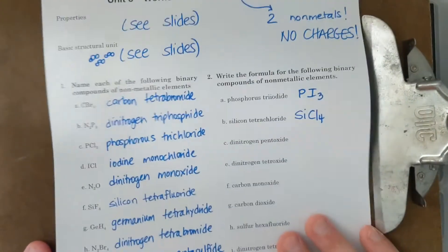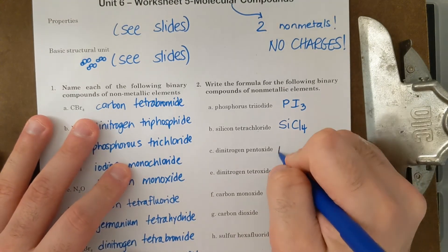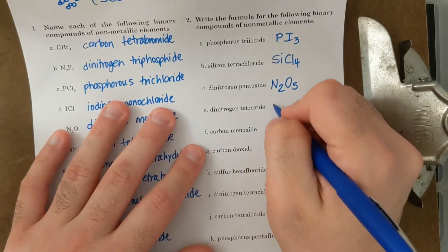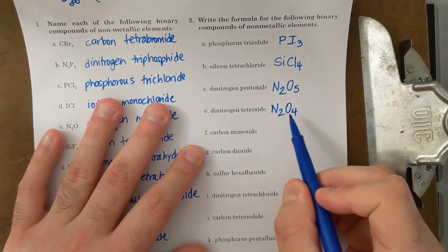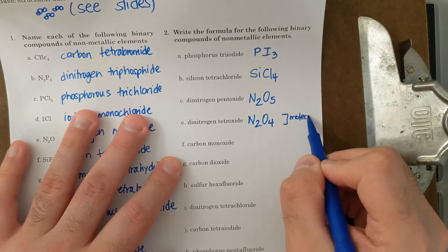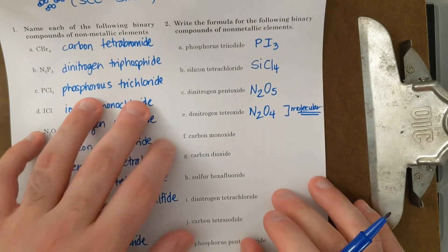All right. Continuing on, I have dinitrogen pentoxide, N2O5. Dinitrogen tetroxide, N2O4. And then don't worry that it's not simplified. It's molecular. Doesn't need to be simplified. Molecular compounds don't need to be simplified. Ionic compounds do.